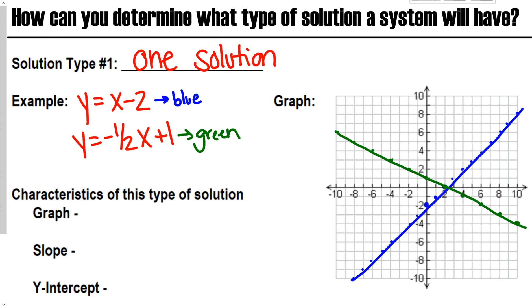And then what I see here is, hey, here's my solution point, because that's where my two lines intersect, and that is at (2, 0).